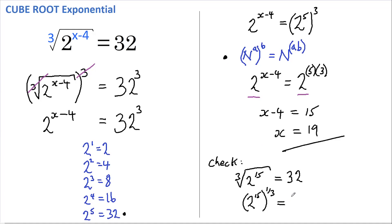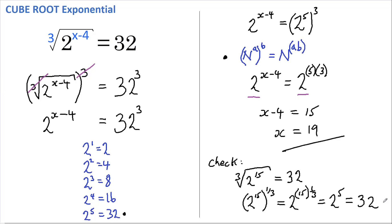And again, in accordance with this rule, we can rewrite this as 2 to the power of 15 multiplied by 1/3, which equals 2 to the power of 5. And if we check over here we see that 2 to the power of 5 does indeed equal 32, so this equals 32 as expected. Hope that was useful to you — see you in the next video.